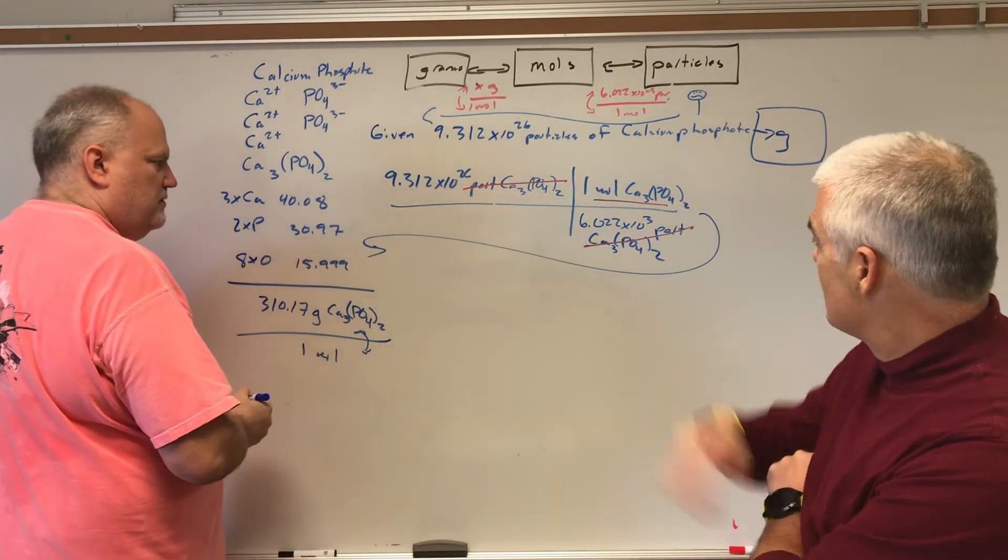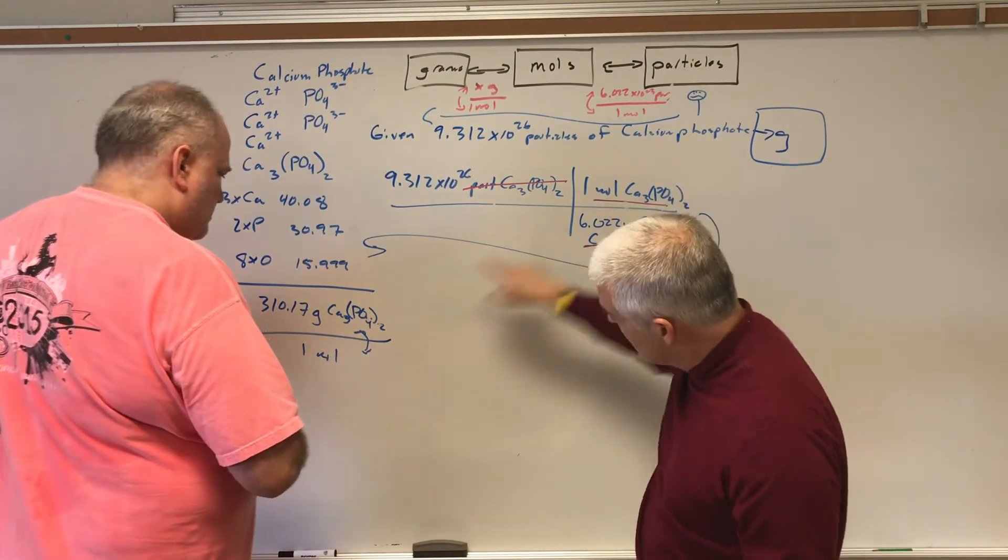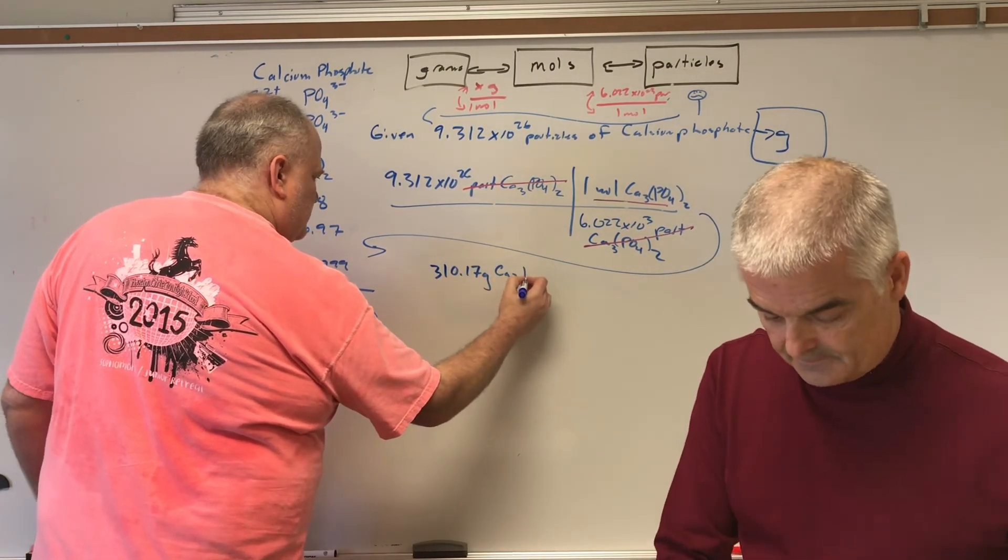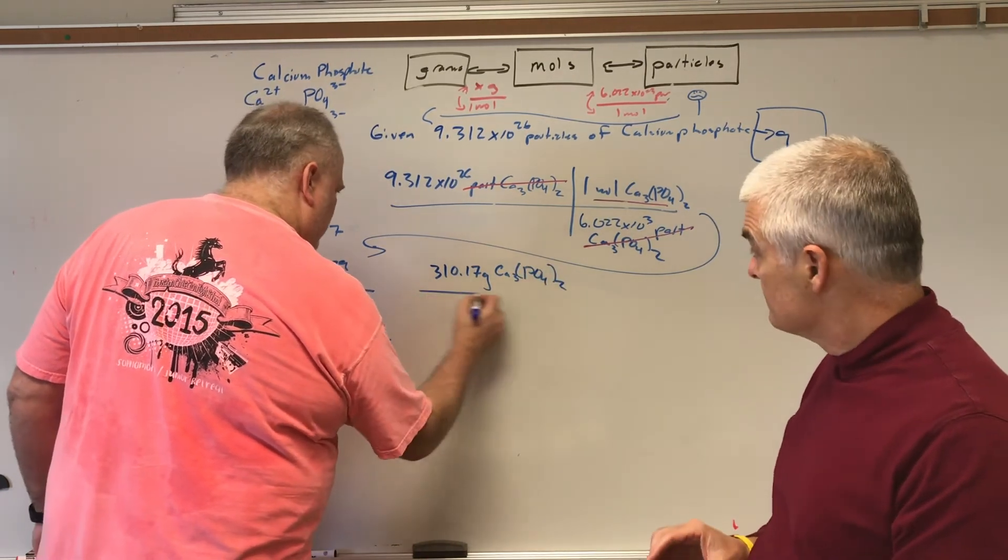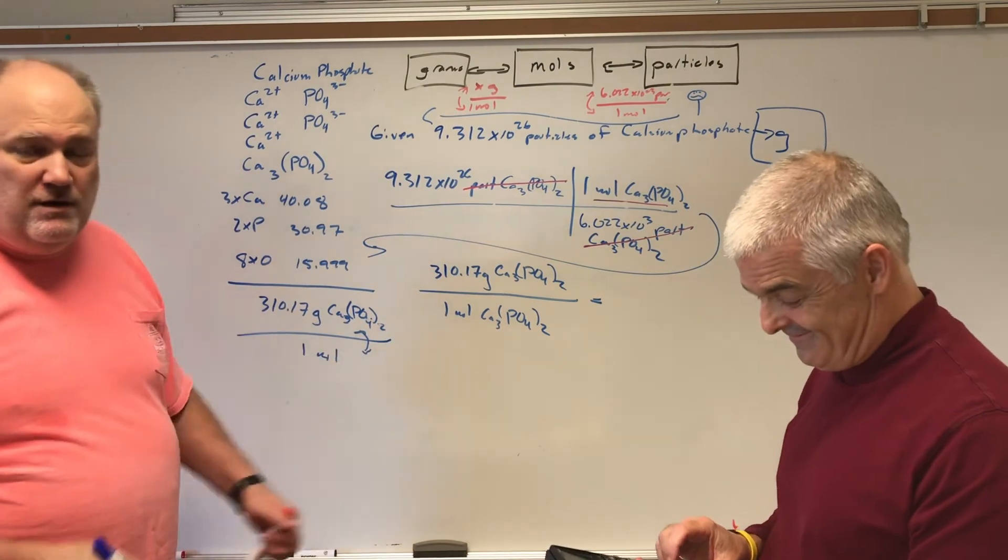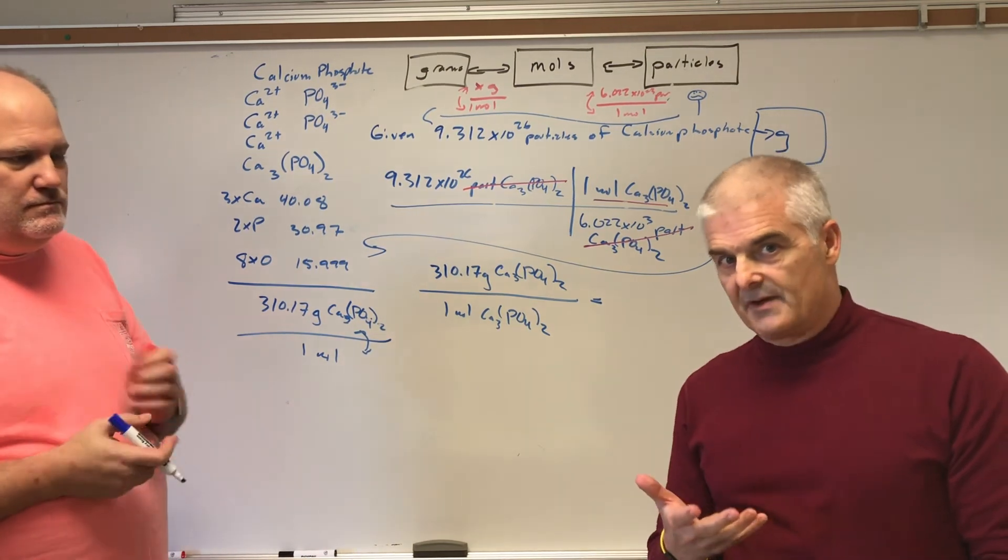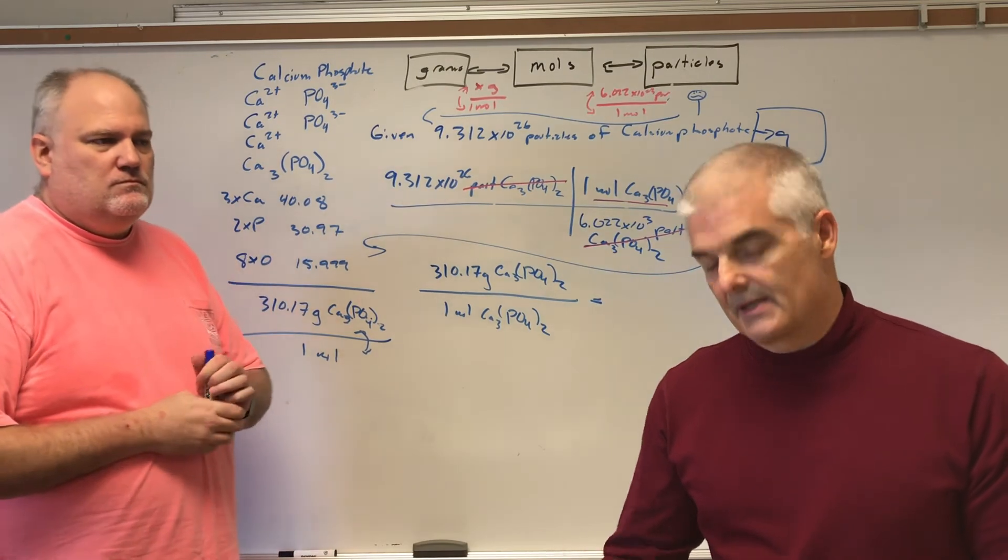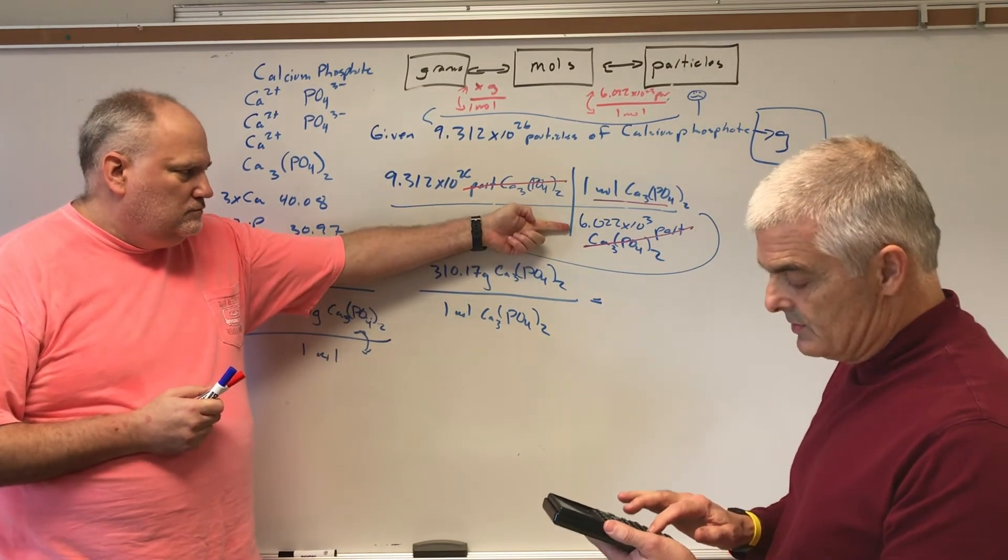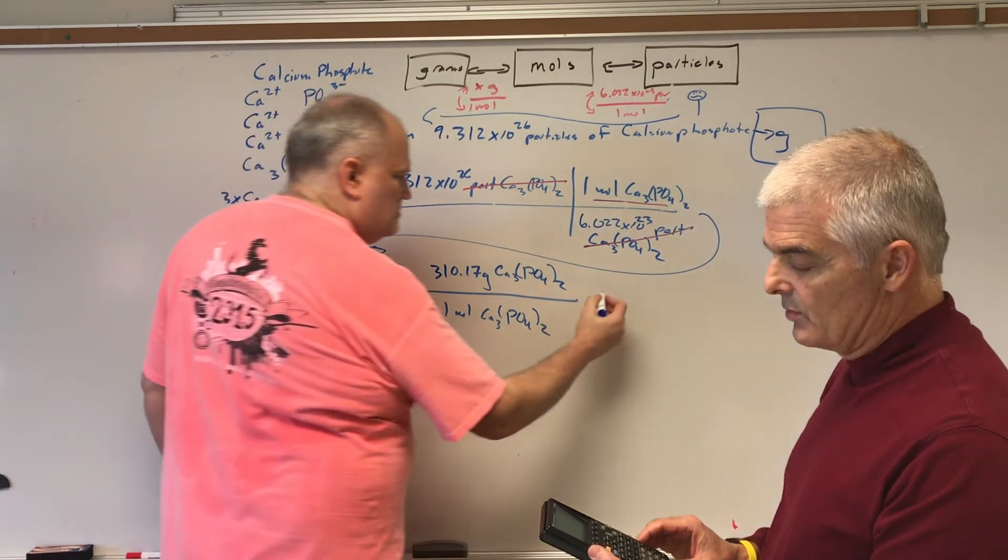Now we're right here, and now this comes into play. We're going to go one more step. I've got moles on top. Do we leave it or flip it? We got moles on the top, I got moles on the bottom. That's what we want. So we leave it. We're going to keep our grams on the top and on the bottom we're going to have one mole of Ca3(PO4)2. I've just typed in 9.312, I push the double E button, and I'm going to type in 126 divided by 6.022 double E 23 times 310.17. And I get a grand total of 479625.